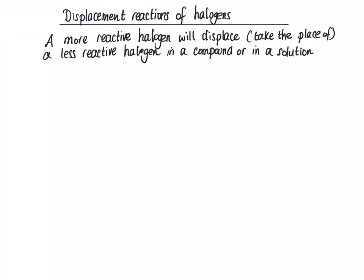Displacement reactions of halogens. A more reactive halogen, chlorine Cl₂, bromine Br₂, will displace, that means take the place of a less reactive halogen in a compound or in a solution.